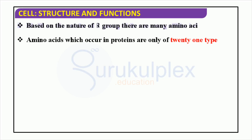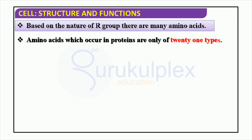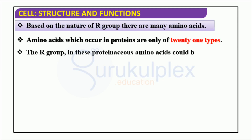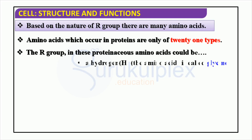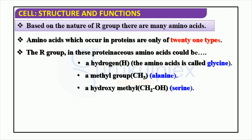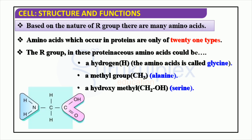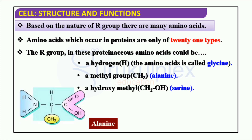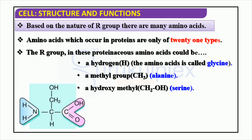Biomolecules are the foundation of life, with amino acids forming the basis of protein structures that are essential to the functioning of our bodies. Different types of amino acids can be identified based on the type of R group they contain. For example, glycine contains a hydrogen, alanine a methyl group, and serine a hydroxymethyl. In total, there are 21 unique varieties of amino acids, which, along with other biomolecules, are responsible for our existence.